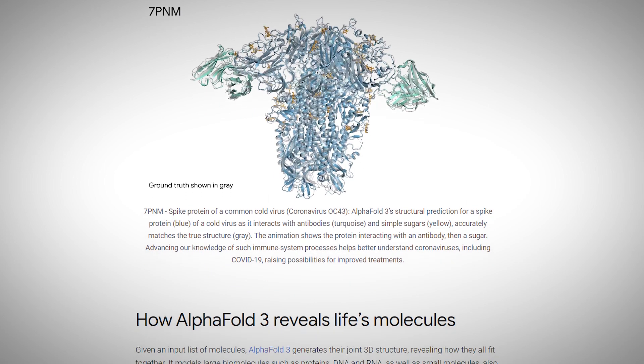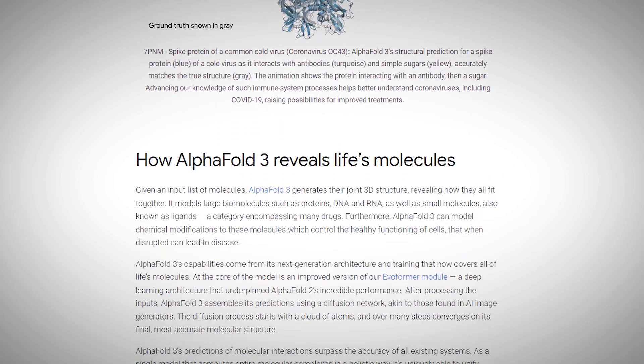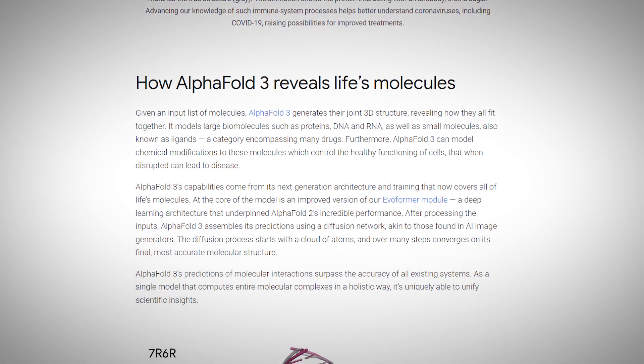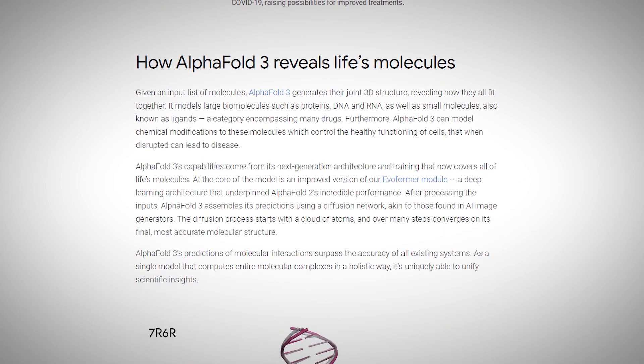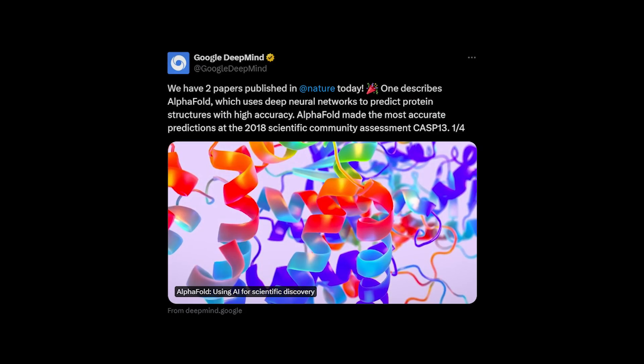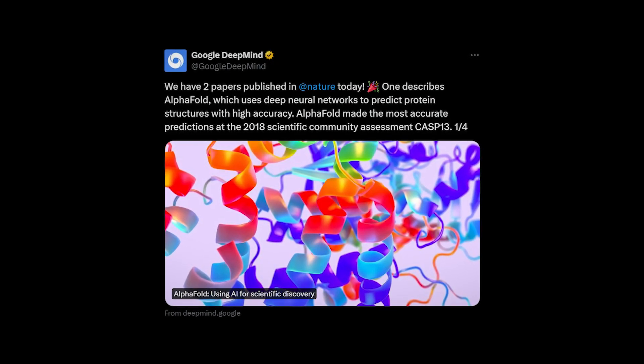AlphaFold3 is the advanced successor to the earlier AlphaFold models that were already super successful at predicting protein structures. The first AlphaFold model, released in 2018, could predict protein structures and even won an international competition.